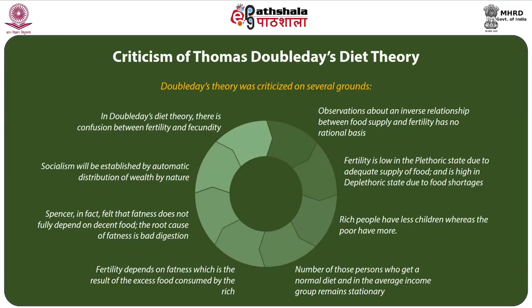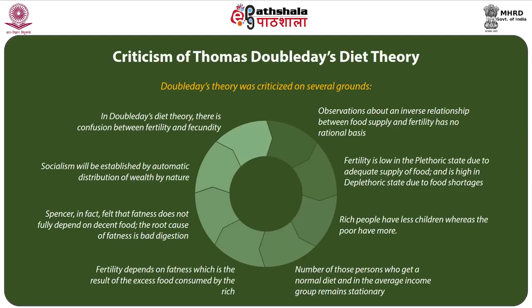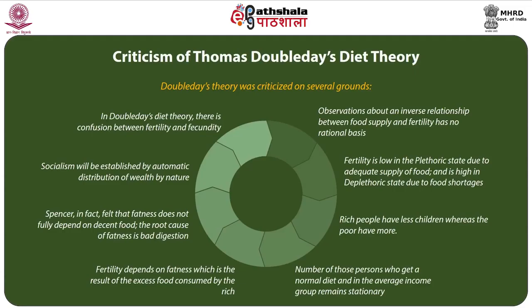Doubleday believed that rich people have fewer children whereas the poor have more. This is far from being true because in many cases we find more children in rich families and less in poor ones. Doubleday opined that those with a normal diet in the average income group remain stationary in number; however, experience has shown that even in such income groups the number has always been increasing. Spencer criticized Doubleday's presumption that fertility depends on fatness, arguing that every rich person may not always be fat and that fatness depends on bad digestion rather than decent food.